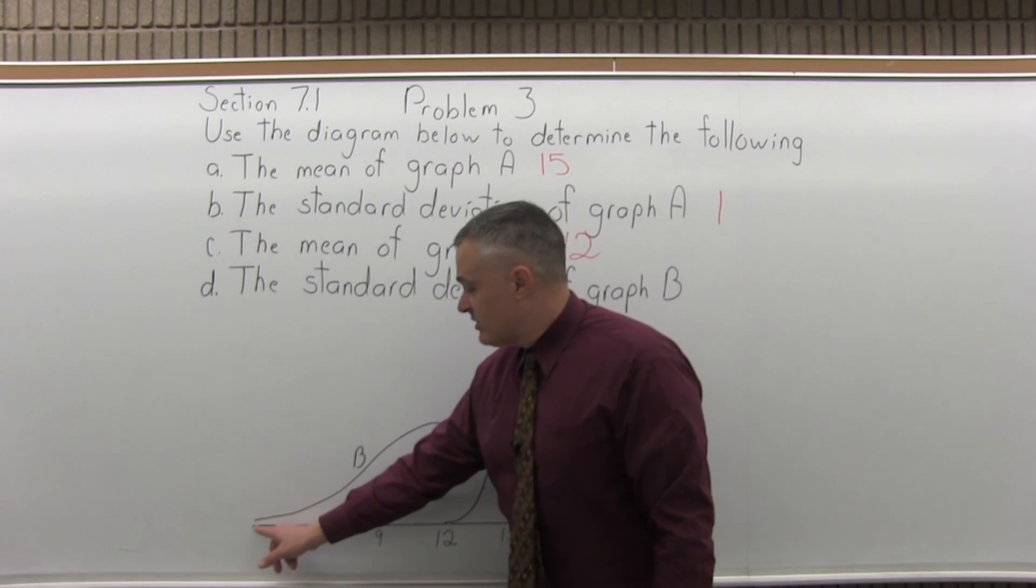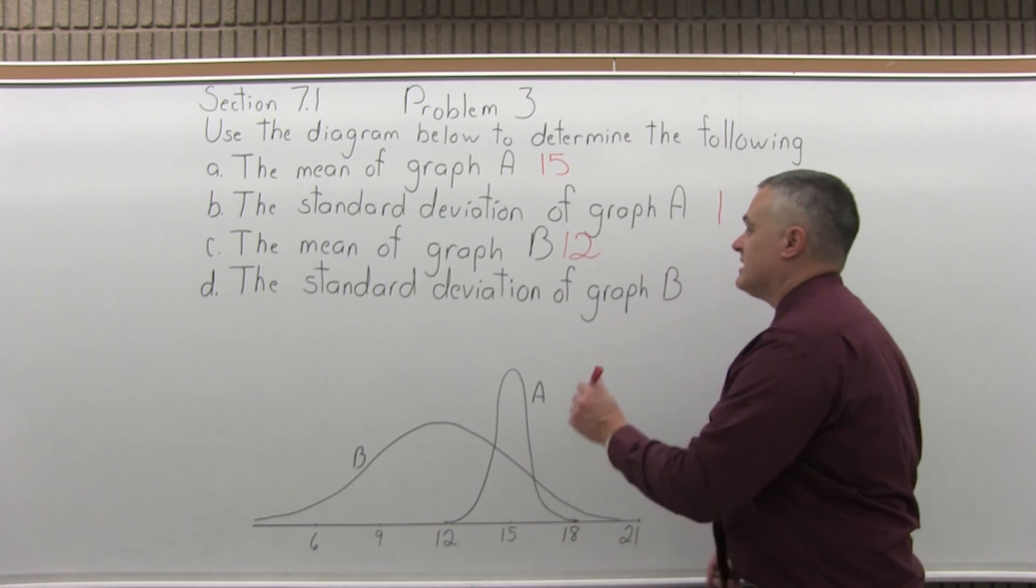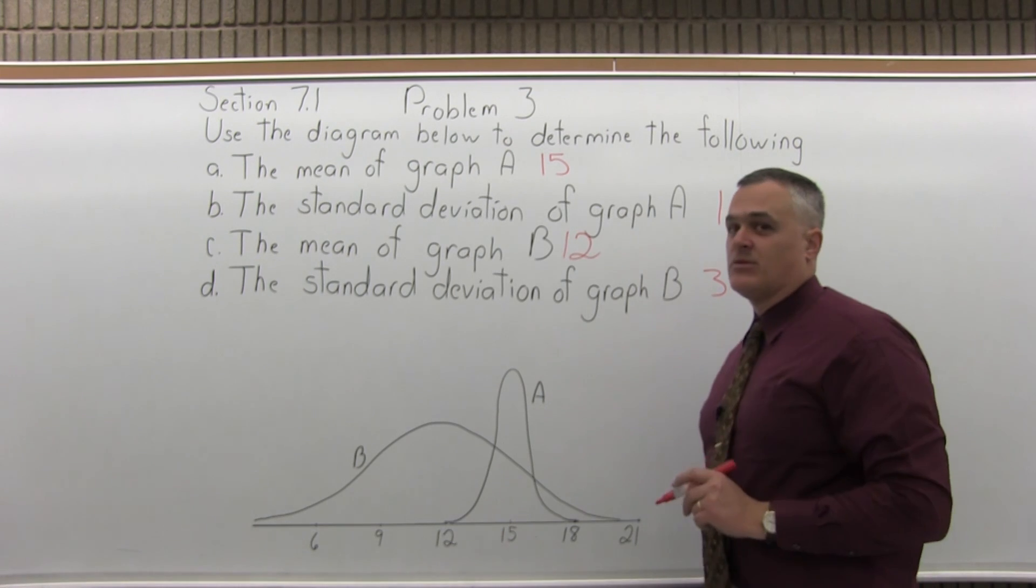So the standard deviation is 3. Three of those will take you down to the small end of the graph, and then three from the center will take you up to the big end. So the standard deviation for graph B is 3.